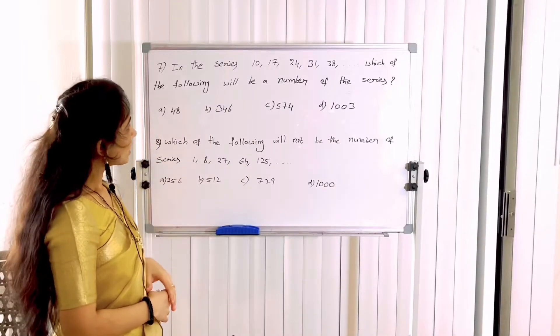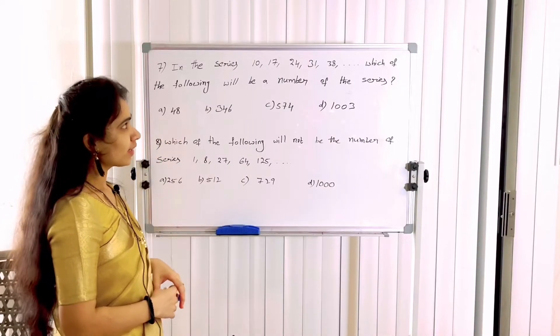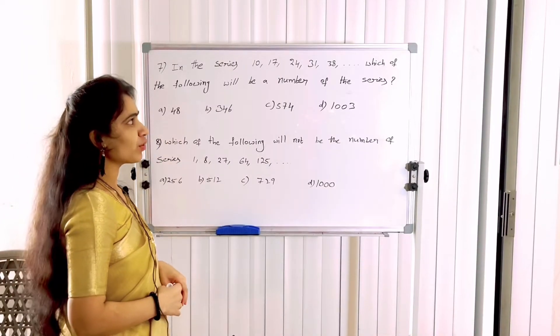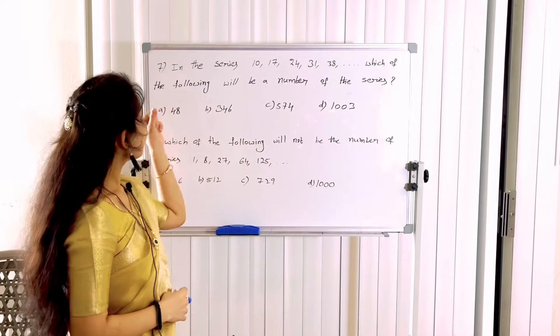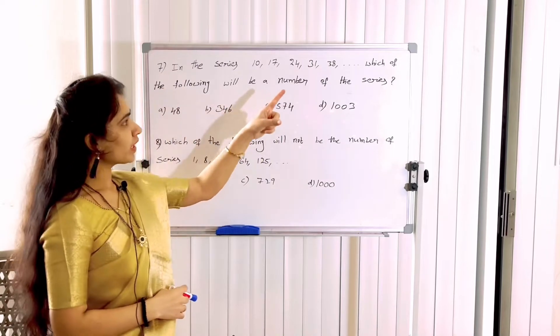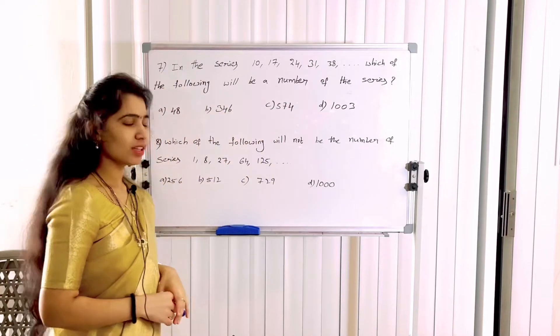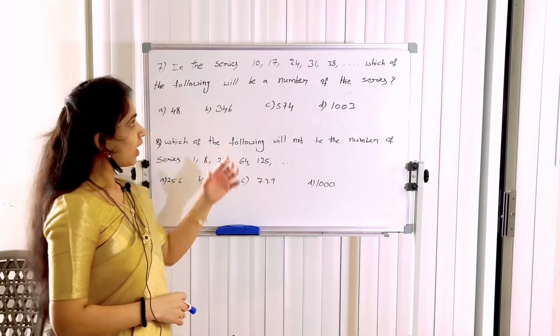7th problem: In the series 10, 17, 24, 31, 38 — which of the following will be a number of the series?